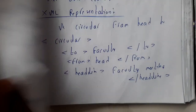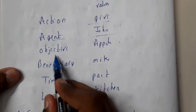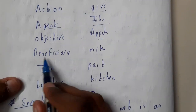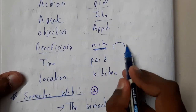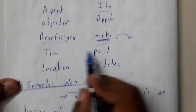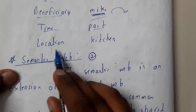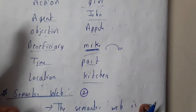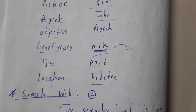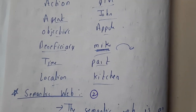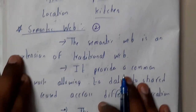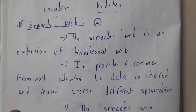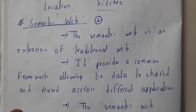If we write this in a table: Action is giving, Agent is John, Object is apple, Beneficiary is Mike (because he is giving to Mike), Time is past (he already gave it), and Location is the kitchen. In this way we divide each and every sentence into sub-modules. I hope everyone got a small idea about case grammar. In the next lecture we'll be going through the semantic web. Thank you for watching.